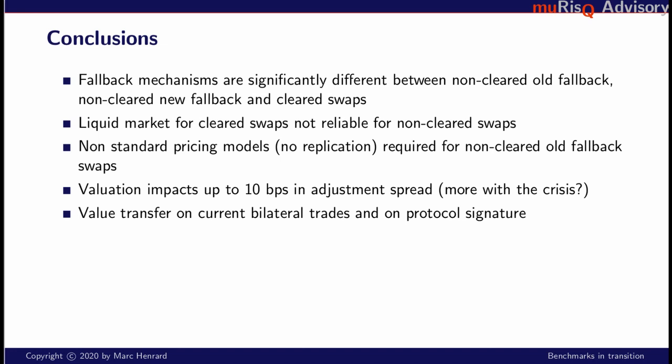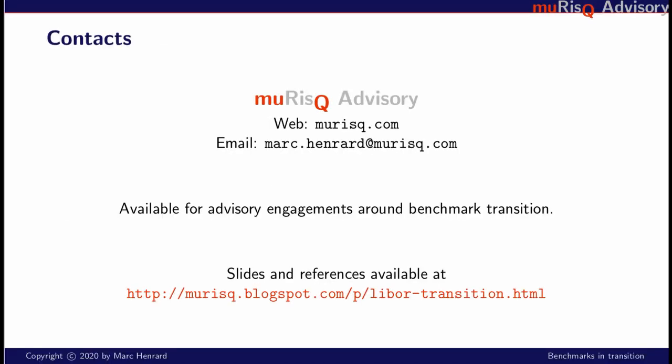The value transfer hidden in this spread exists today when we trade a new derivative based on the current definition at the cleared market level, and it will exist in bulk on the date of the protocol signature if the protocol is signed globally and there is no bilateral compensation. The slides of this presentation are available at the address indicated on screen. Feel free to contact me for any questions or engagement related to the fallback. Thank you.